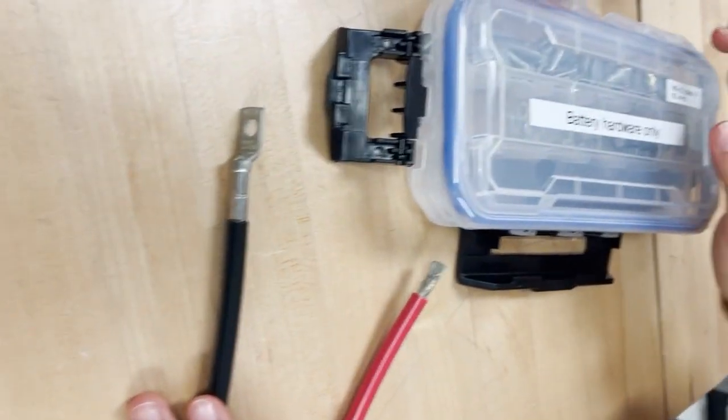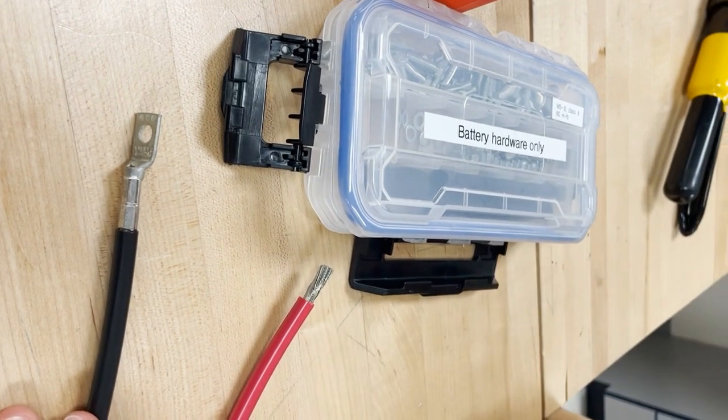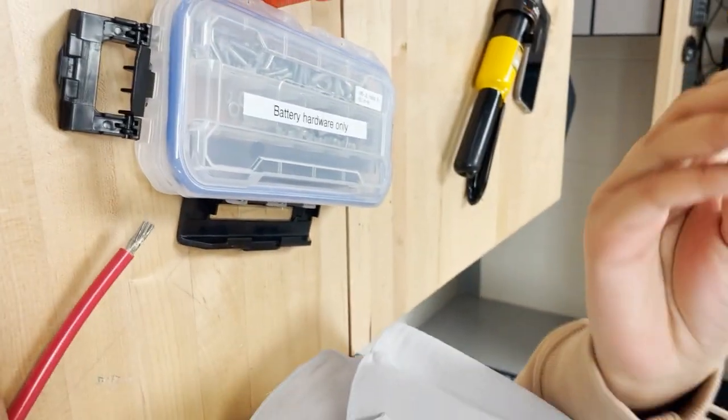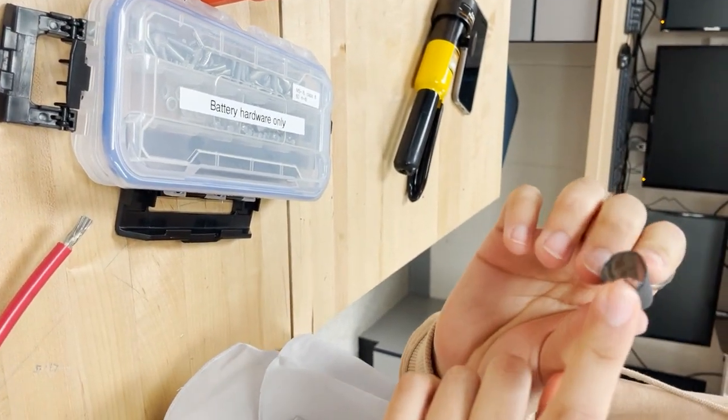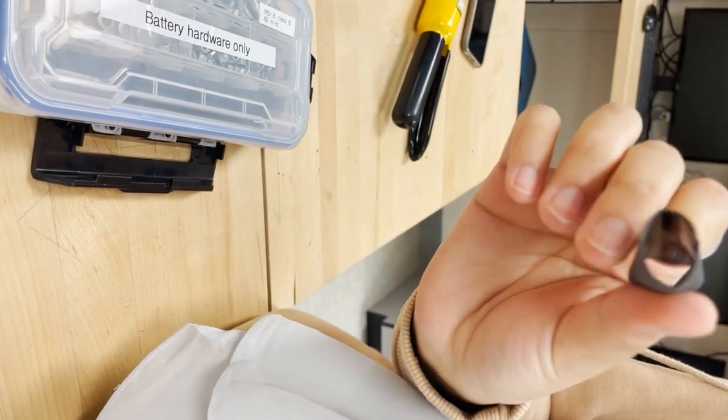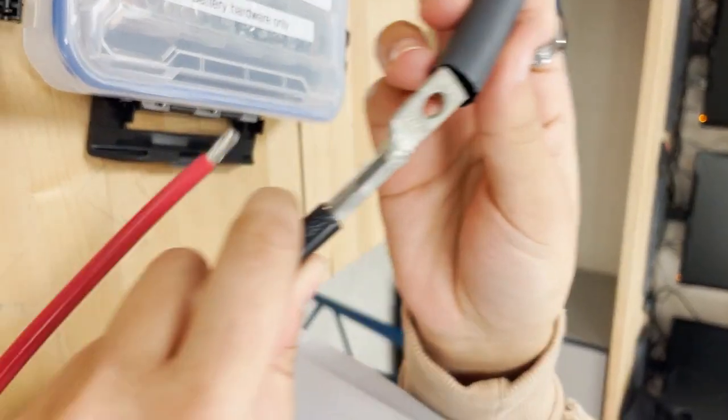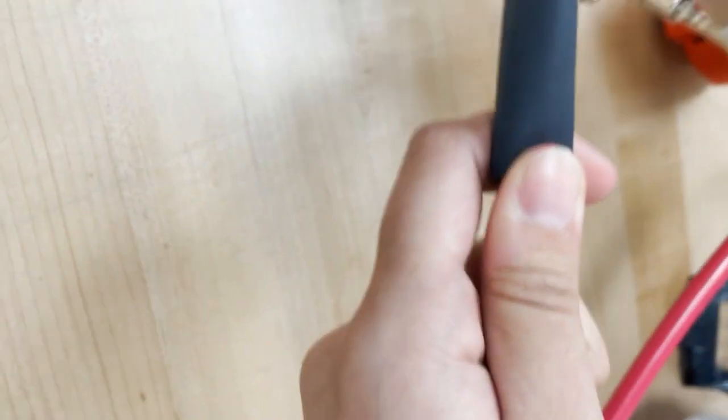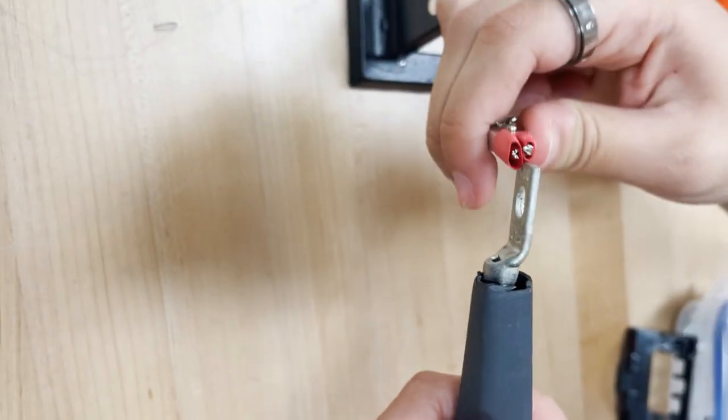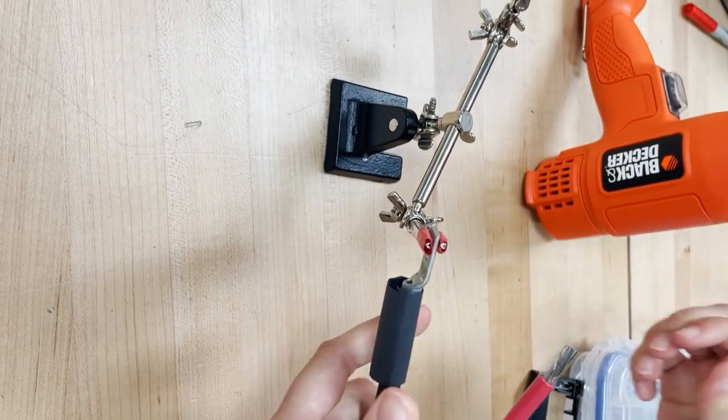The next step in our battery hardware installation is the heat shrink. This is the heat shrink with the adhesive inside so that the adhesive will stick to the battery wires correctly. This should slip over the terminal. And then we're going to put this inside of a helping hand so that we can get a proper shrink on it.